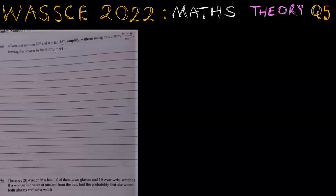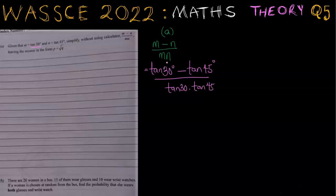Leaving the answer in the form p plus root q. This is what we are evaluating, m minus n over mn. And since m is tan 30 degrees, this is going to be tan 30 degrees minus n is tan 45. So this is tan 30 minus tan 45 divided by tan 30 times tan 45. mn is m times n.